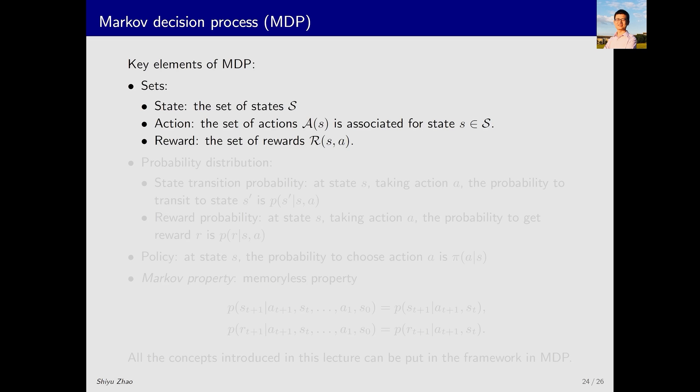Thus far, we have introduced some important concepts in reinforcement learning through examples. Next, we incorporate these concepts into the framework of the Markov decision process, abbreviated as MDP. An MDP comprises several key elements. First, it contains some sets. The first set is the state space. The second set is the action space. The third set is the reward set.